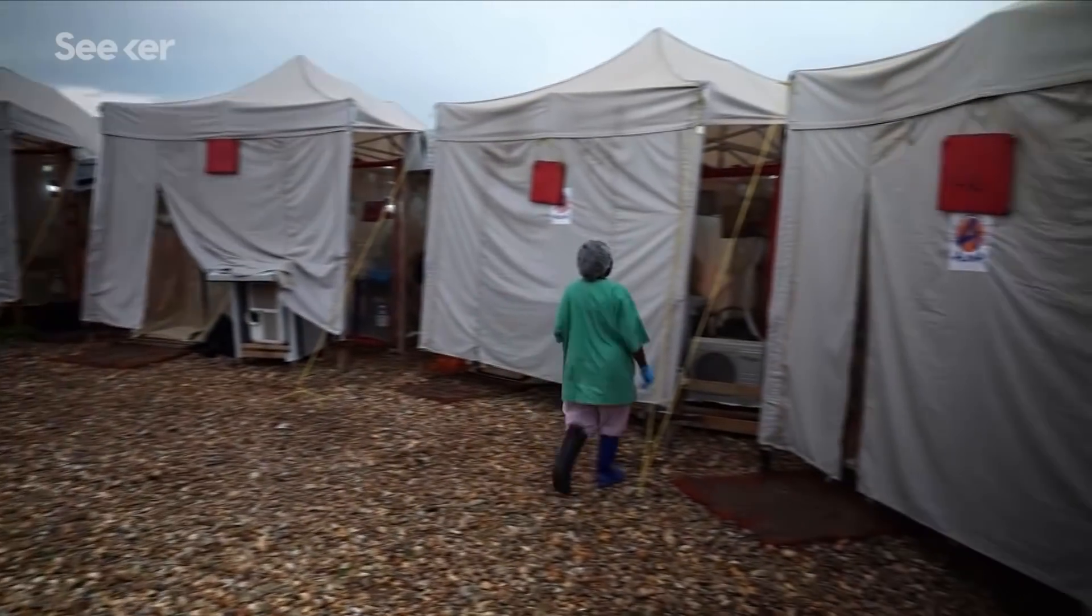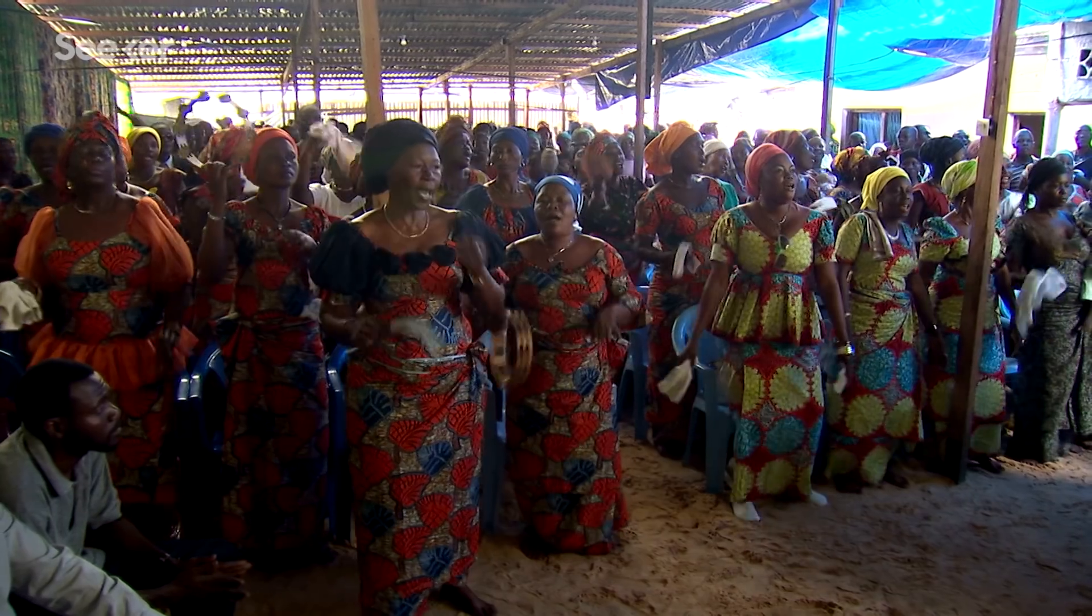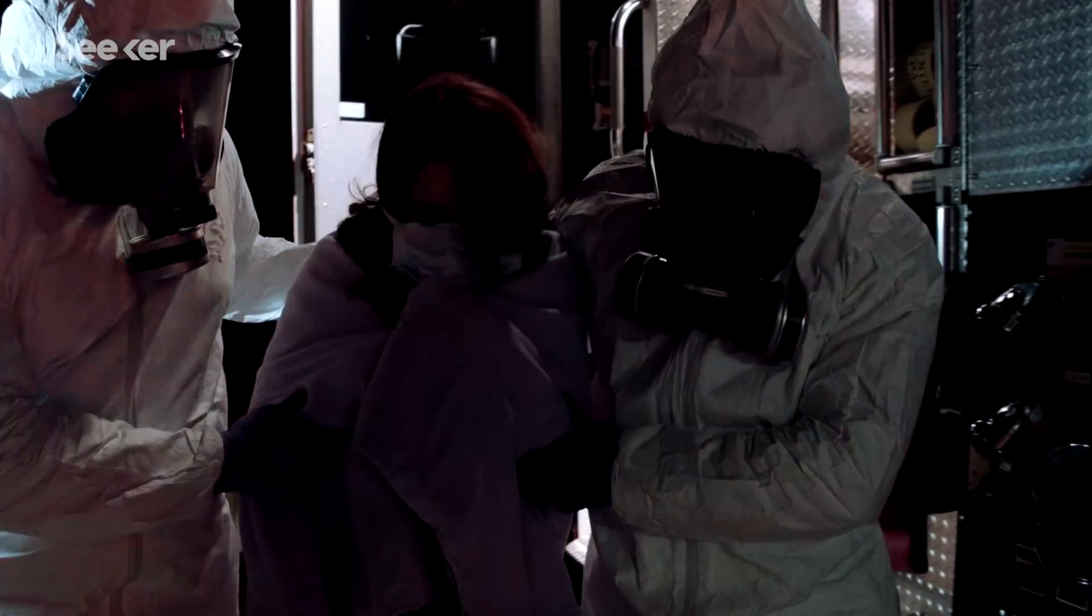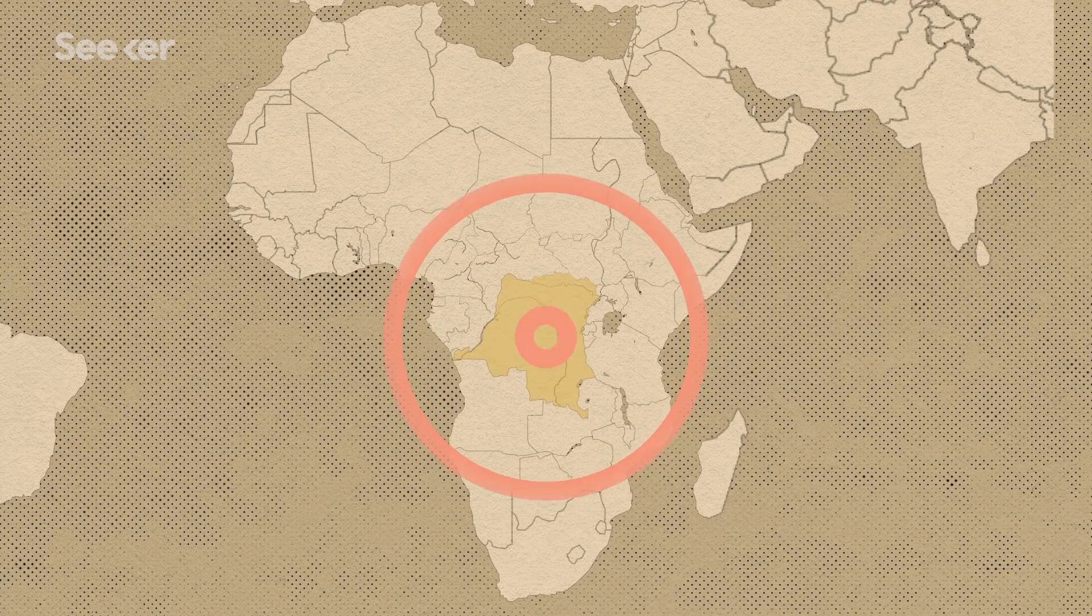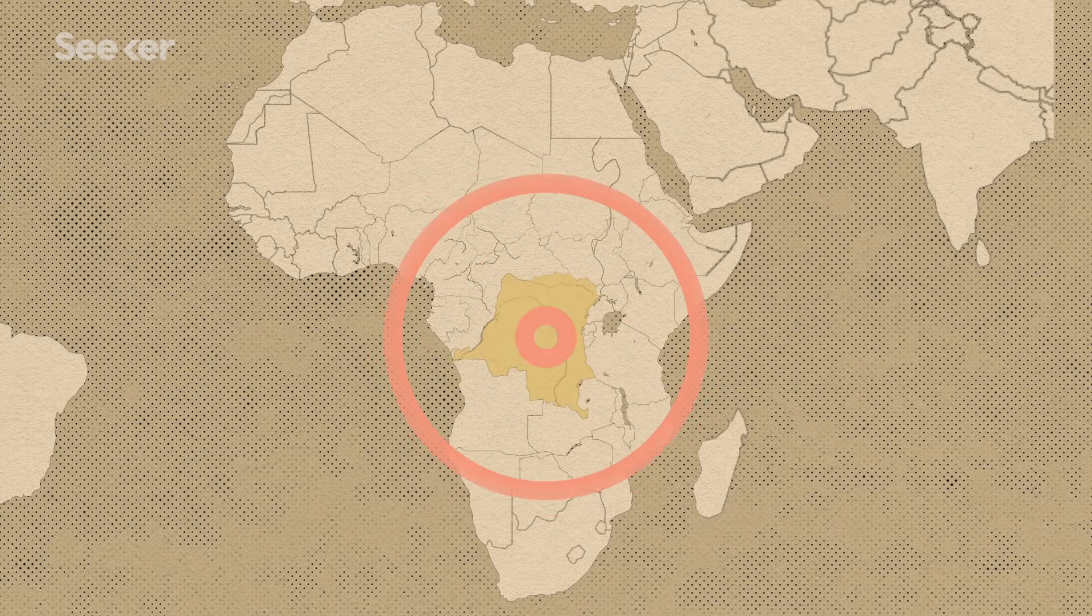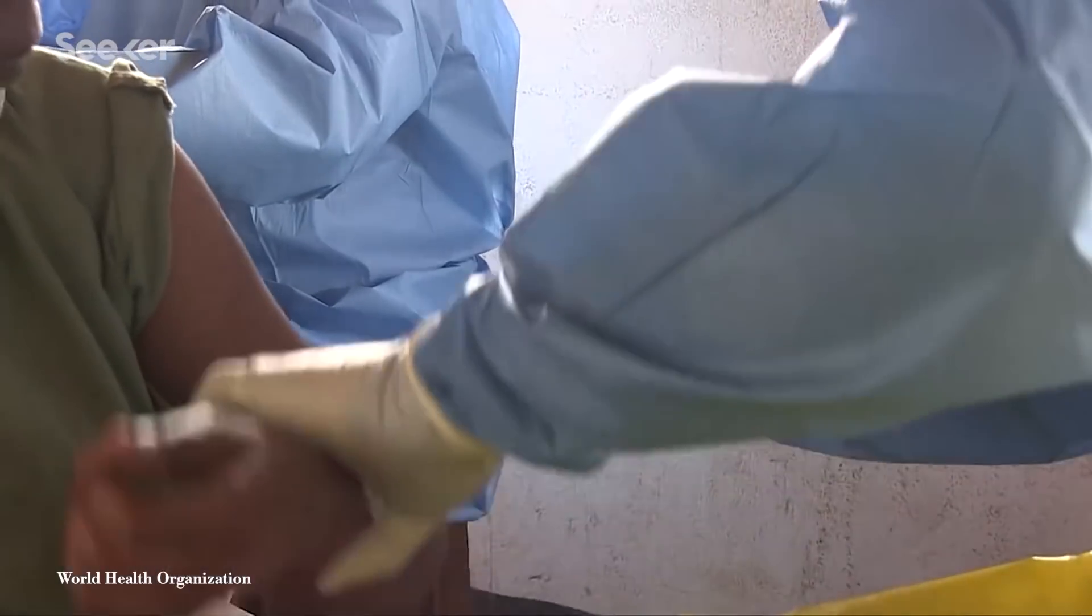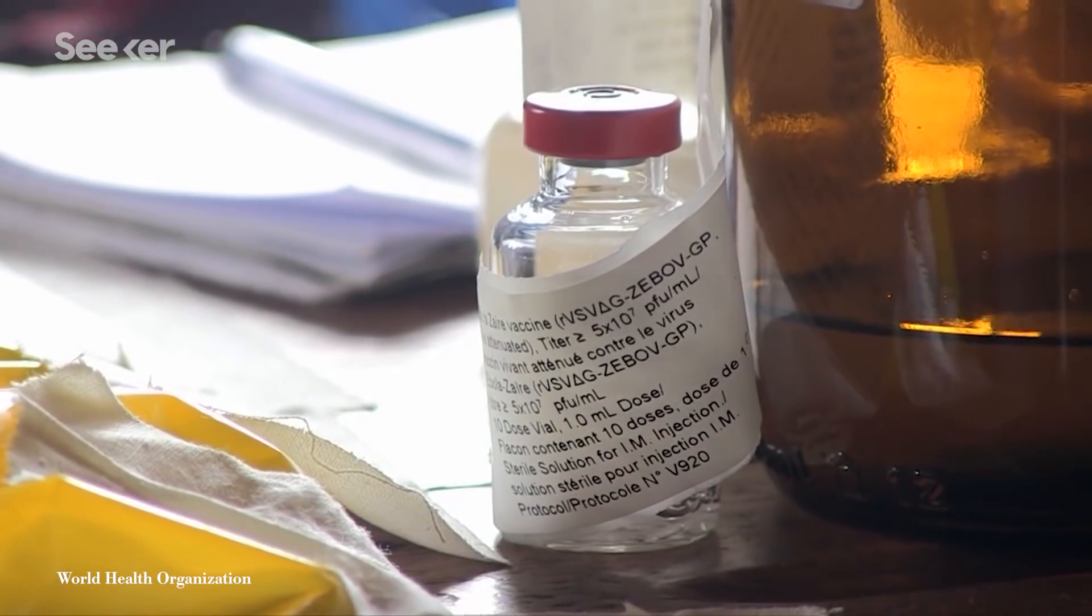Ebola outbreaks have become progressively harder to contain as they approach urban areas. And due to its disproportionate effect on healthcare workers, the ripple effects of the disease have been devastating. This makes finding preventative measures a key priority. To achieve that, two experimental vaccines are currently in use in the DRC, based on their success in previous outbreaks and phase two clinical trials.